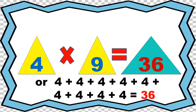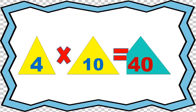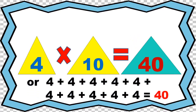Or 4 plus 4 plus 4 plus 4 plus 4 plus 4 plus 4 plus 4 plus 4 equals 36. 4 times 10 equals 40, or 4 plus 4 plus 4 plus 4 plus 4 plus 4 plus 4 plus 4 plus 4 plus 4 equals 40.